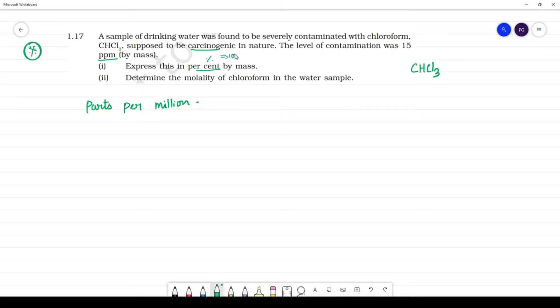Percentage is 100. So what is 15 ppm? What is 15 parts per million? 1 million is equal to 10 to the power of 6. So 15 by 10 to the power of 6. It is 15 parts per million.